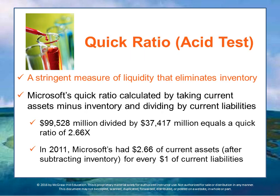Also important is the quick ratio, or acid test, which measures only ready liquid assets. It's a far more stringent measure of liquidity because it eliminates inventory — the least liquid current asset — since you don't necessarily get dollar-for-dollar value if you had to liquidate. This measures how well a company can meet current obligations without selling off inventory. Microsoft had $2.66 in current assets minus inventory for every $1 of current liabilities: $99.5 billion divided by $37.4 billion gives a quick ratio of 2.66. These are strong ratios.